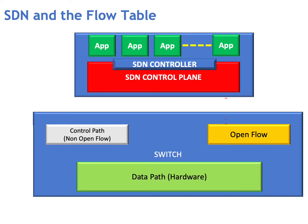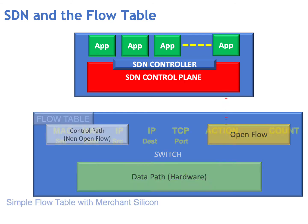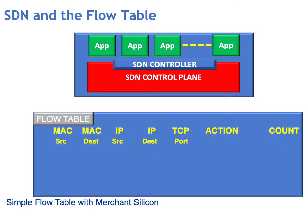Basically, the SDN controller is going to interface to the switch or router using the OpenFlow interface. The SDN controller is going to configure a flow table within the remote switch-router. Using standard off-the-shelf silicon, or merchant silicon, we can make decisions on how to forward packets based on their source and destination MAC addresses, their source and destination IP addresses.